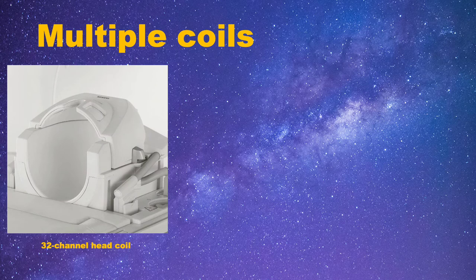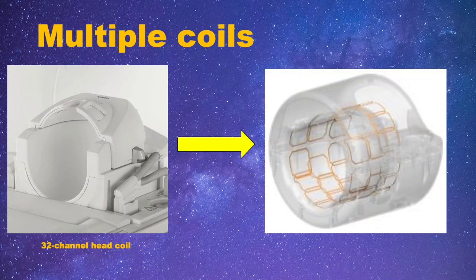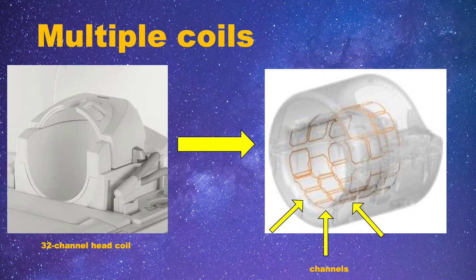Look at this picture of a typical head coil. Notice I labeled this picture as a 32 channel head coil. What does the channel here mean? Simply, it means there are as many as 32 small circuit loops inside the whole coil.